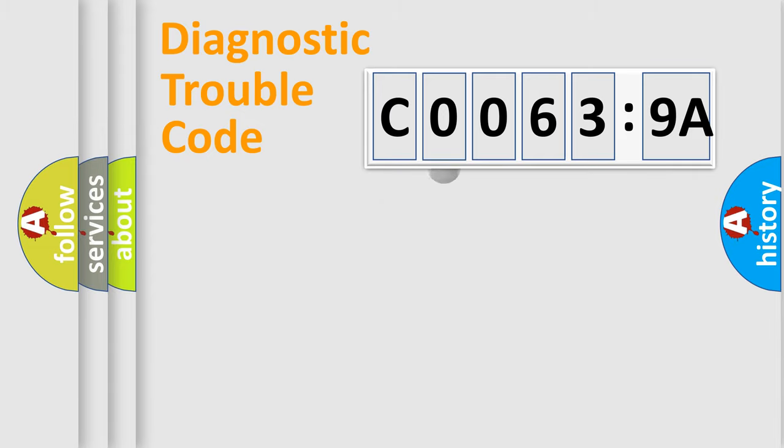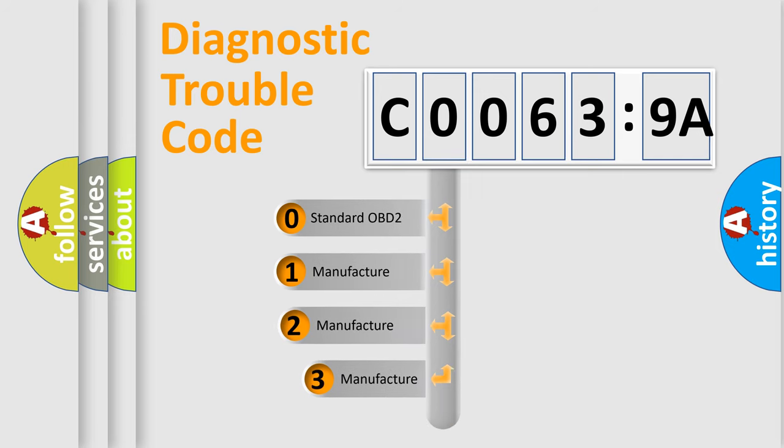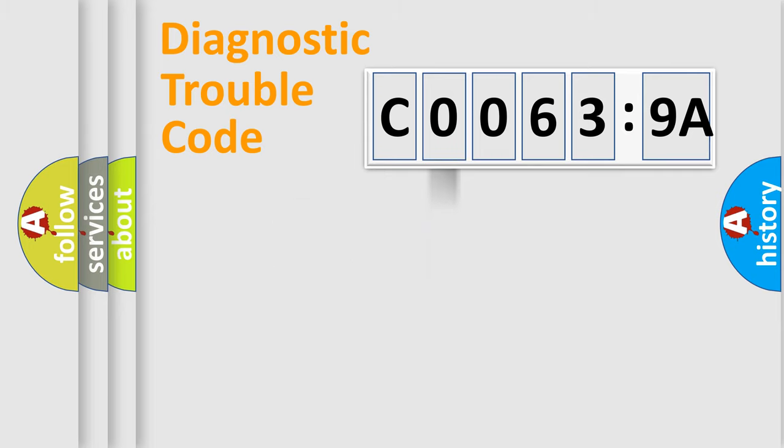The third character specifies a subset of errors. The distribution shown is valid only for the standardized DTC code. Only the last two characters define the specific fault of the group.